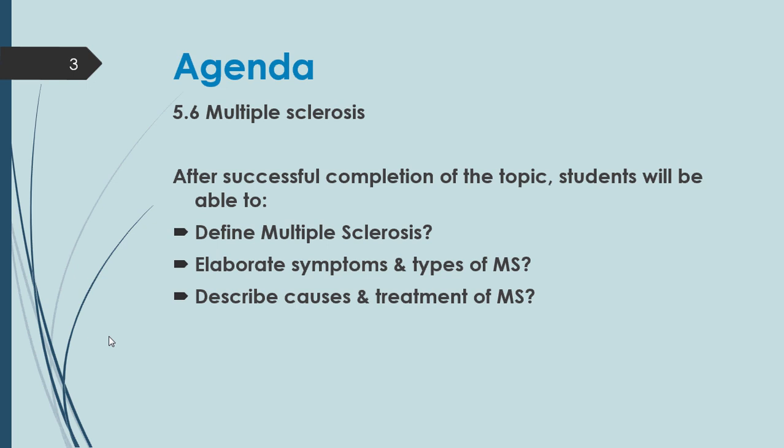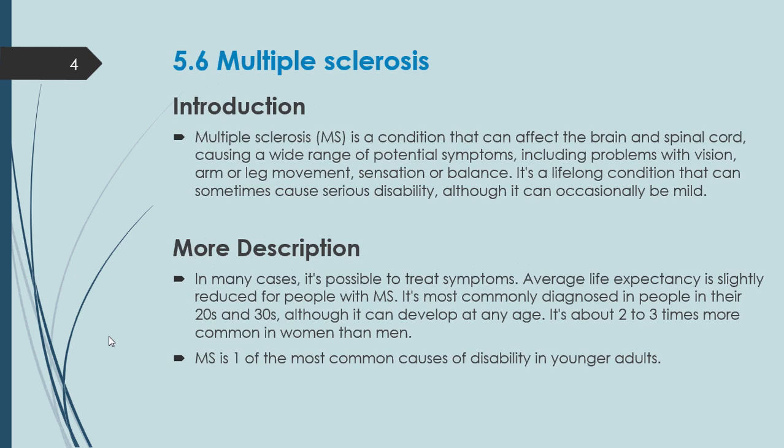Let's talk about the introduction. Multiple Sclerosis, MS, is a condition that can affect the brain and spinal cord, causing a wide range of potential symptoms. Among those symptoms are problems with vision.